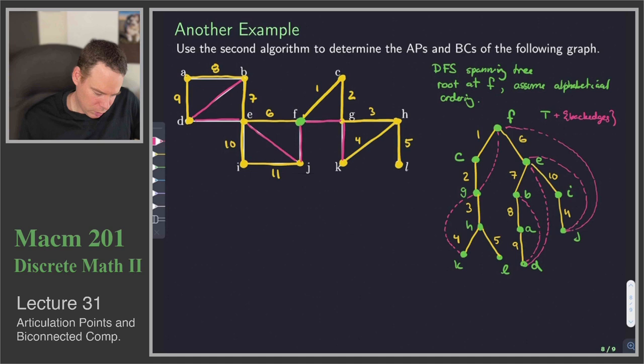And what's our pre-order traversal? Well, it's going to be F, C, G, H, K, L, E, B, A, D, I, J. So there's our pre-order traversal.